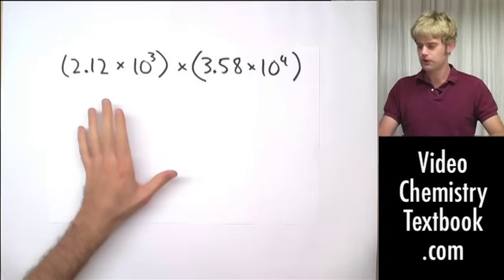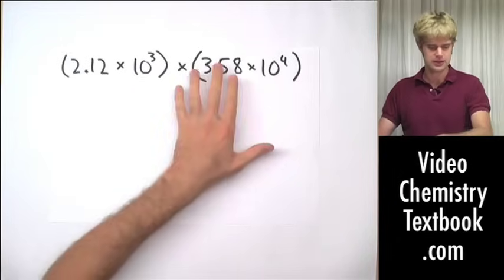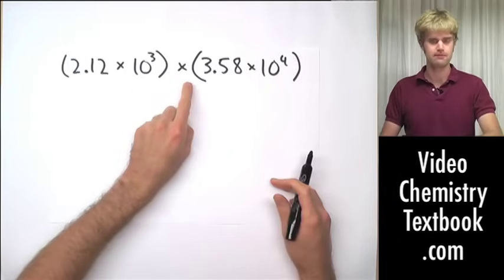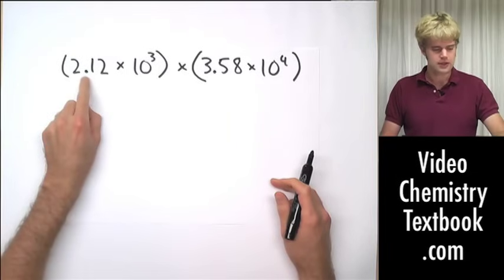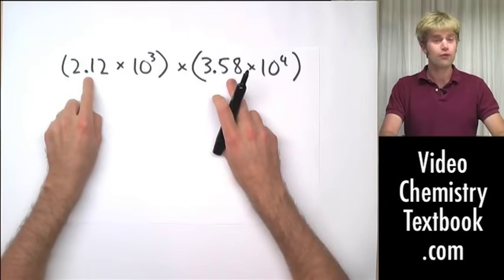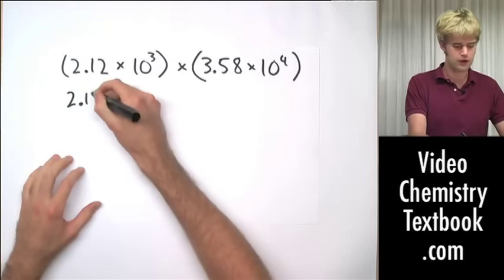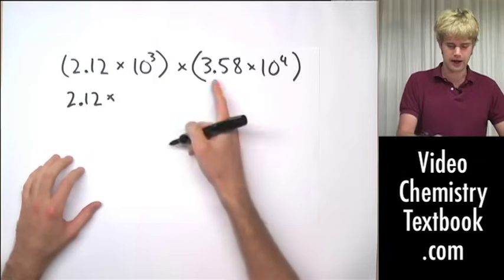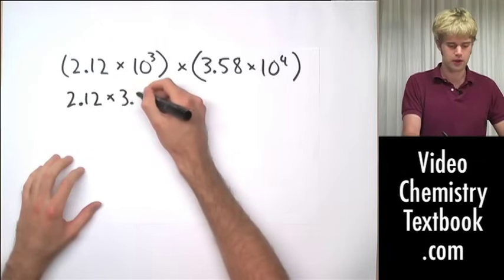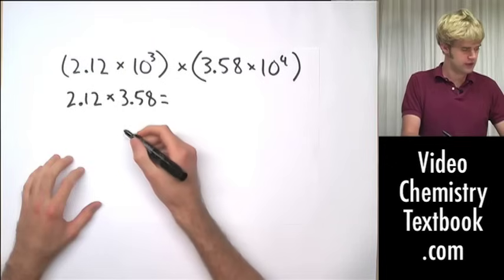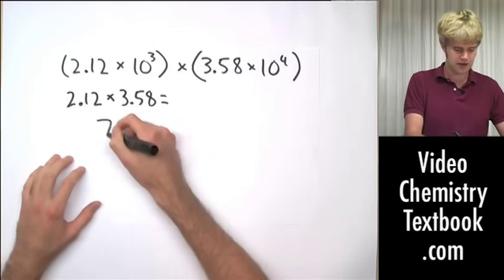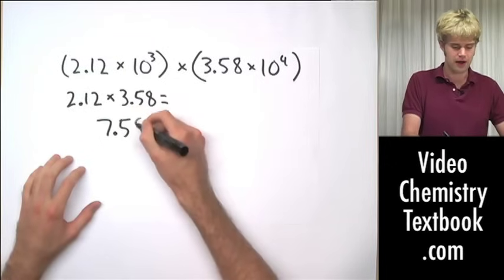Whenever we do a multiplication division problem, we break this into two smaller problems. The first thing that I want to do is multiply the coefficients together. So I'm going to do 2.12 times 3.58, and the answer there is going to be 7.59.